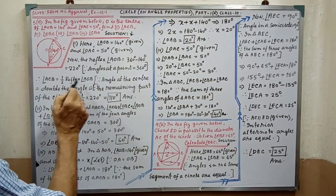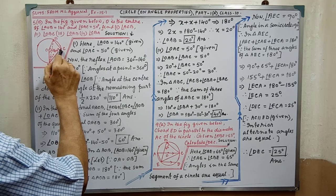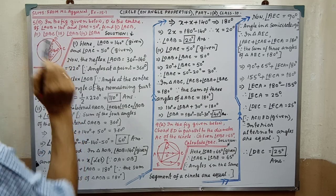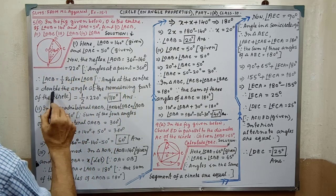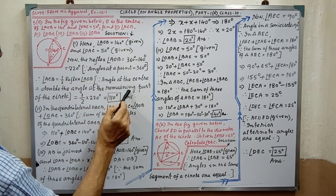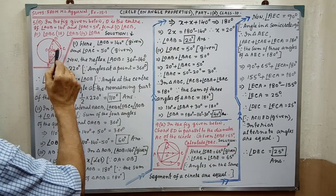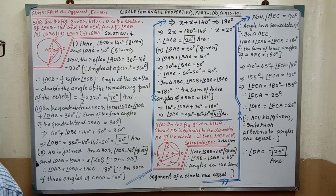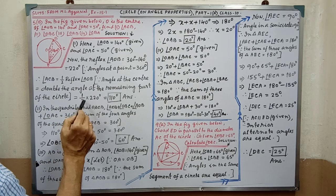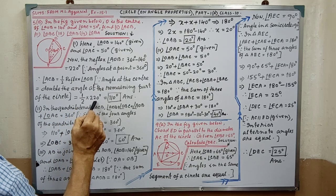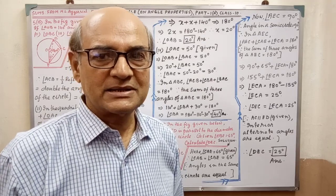Therefore angle ACB equal to half of reflex angle AOB. That is angle ACB is half of this angle. Since the angle at the center is equal to double the angle at the remaining part of the circle, angle ACB equal to half of 220 degree. By calculation, it is coming 110 degree. First part is completed.